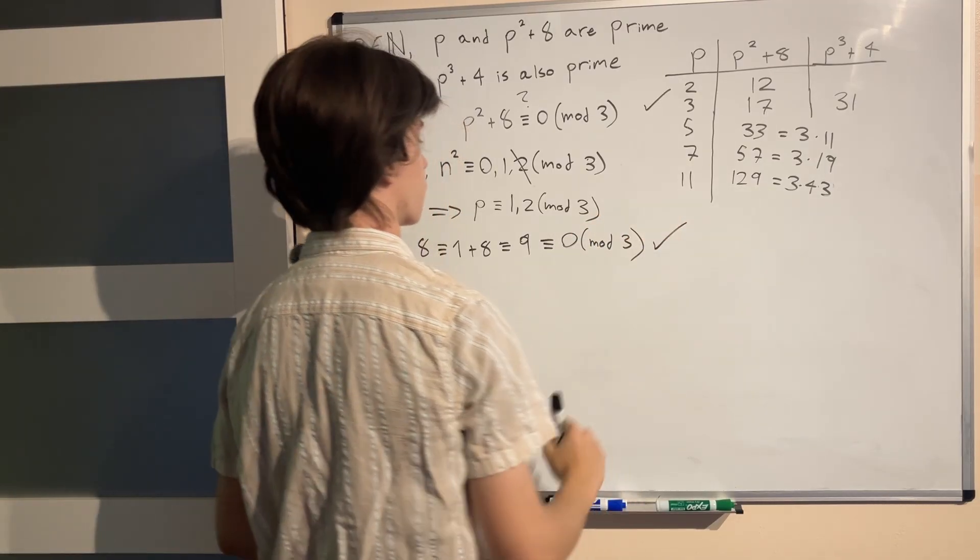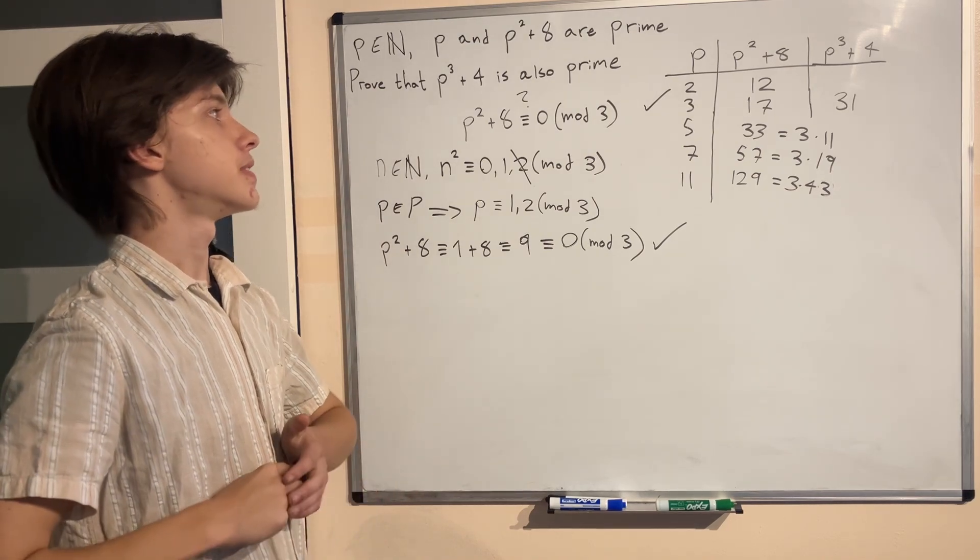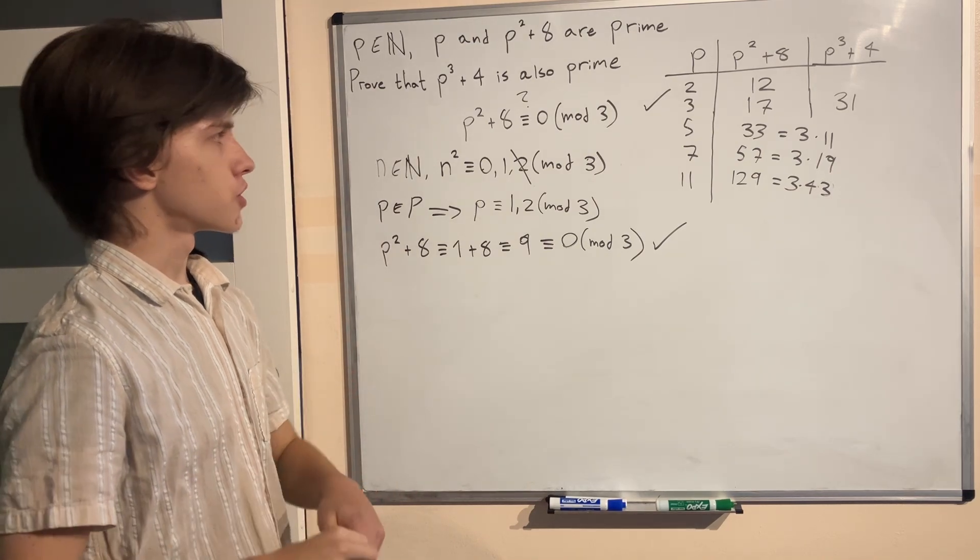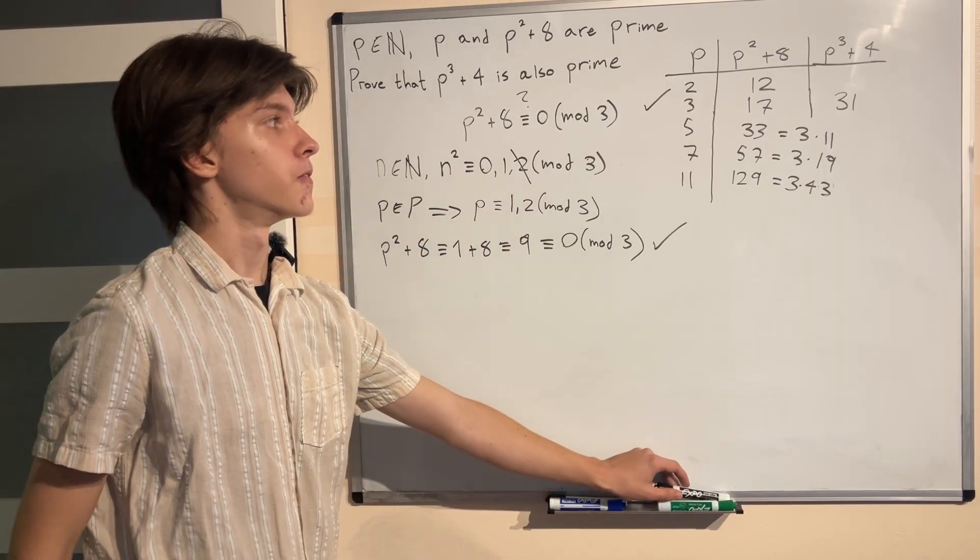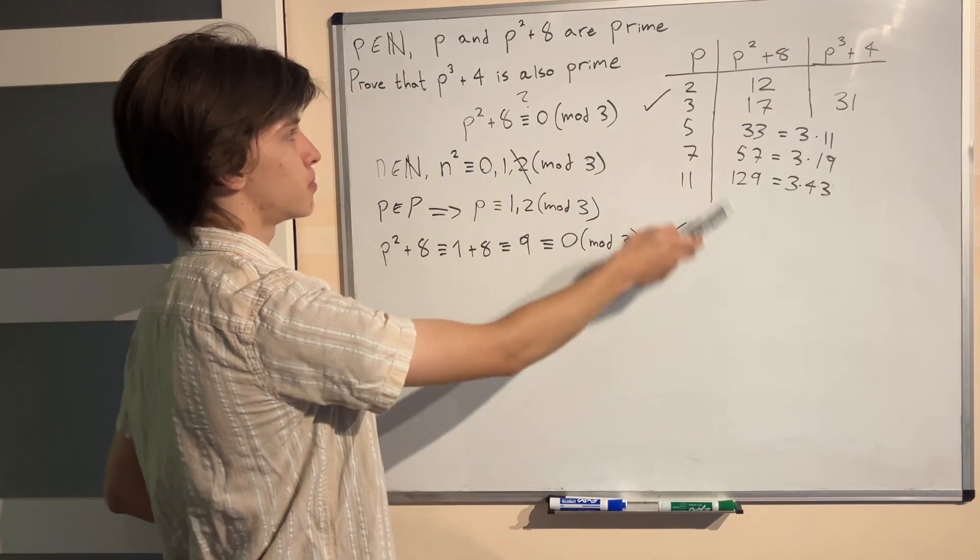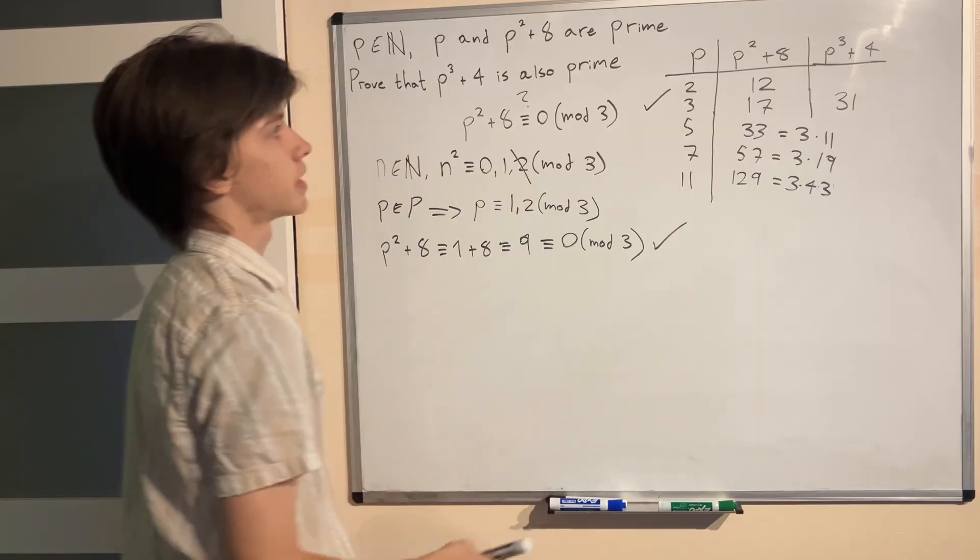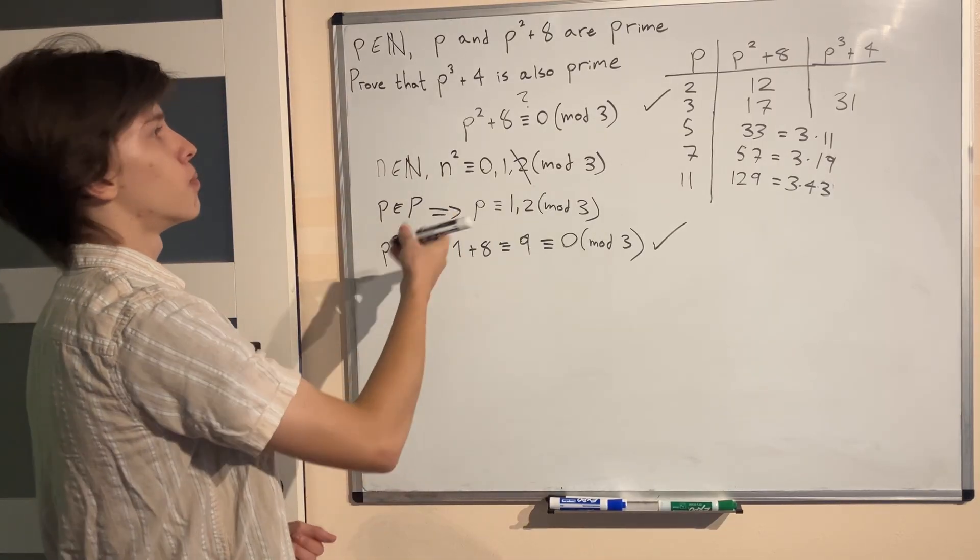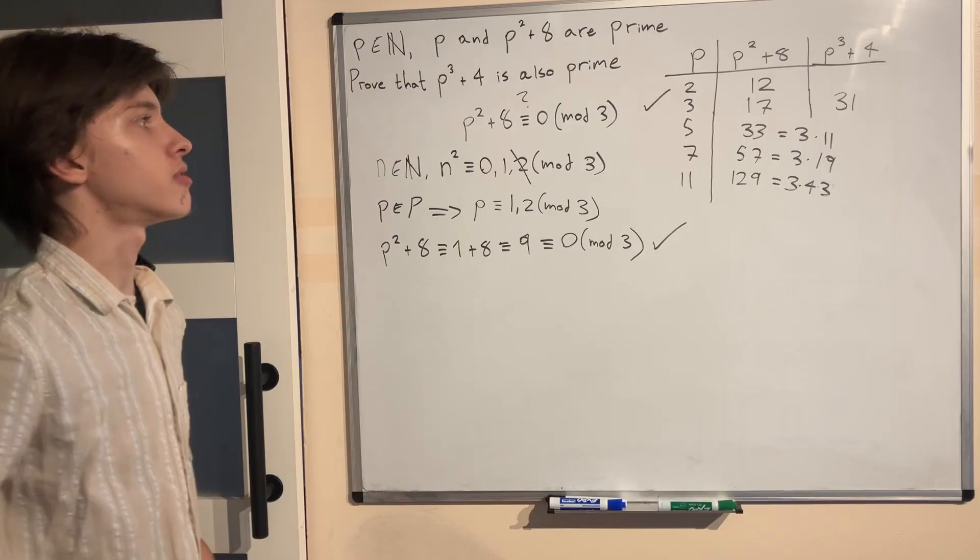And so we are basically done with the problem. We show that for any prime that is greater than 3 of course p² + 8 will be divisible by 3. Meaning that if we keep testing out primes for p, p² + 8 will never be prime itself. Meaning that p³ + 4 can also never be prime. Well maybe it can but not fitting our conditions that p and p² + 8 are prime.